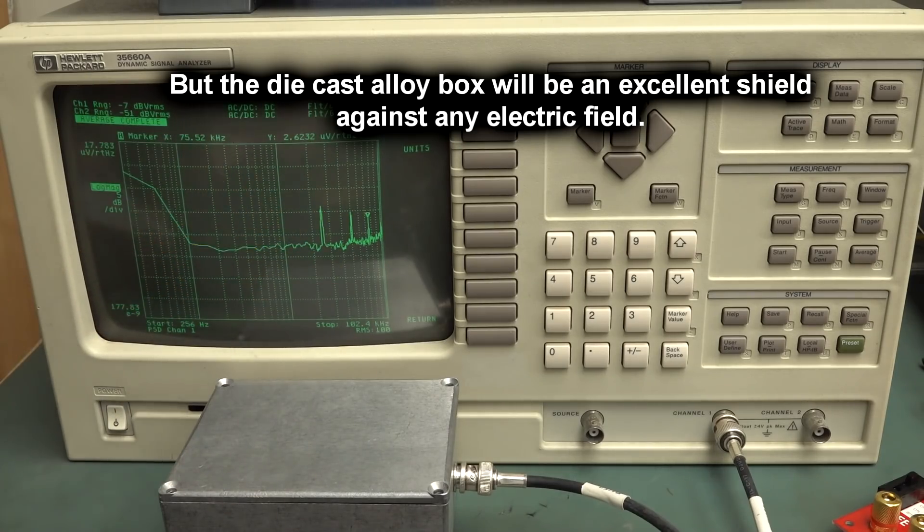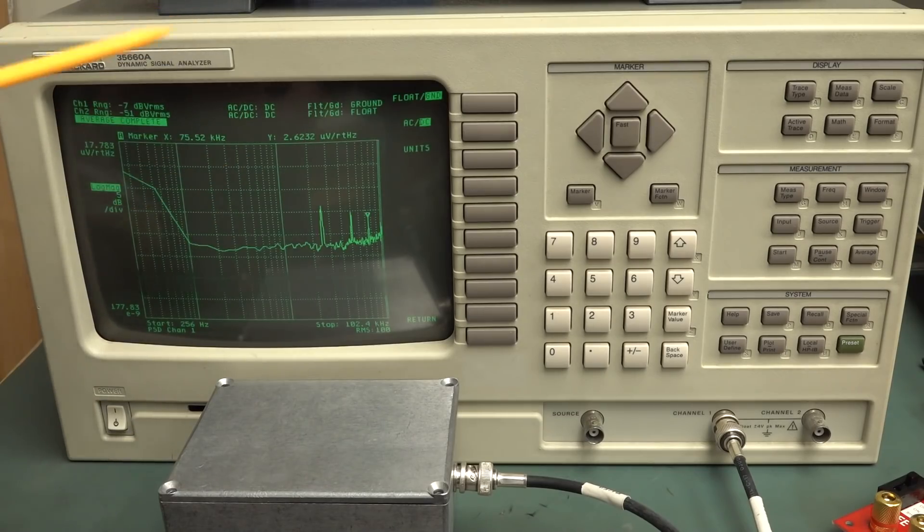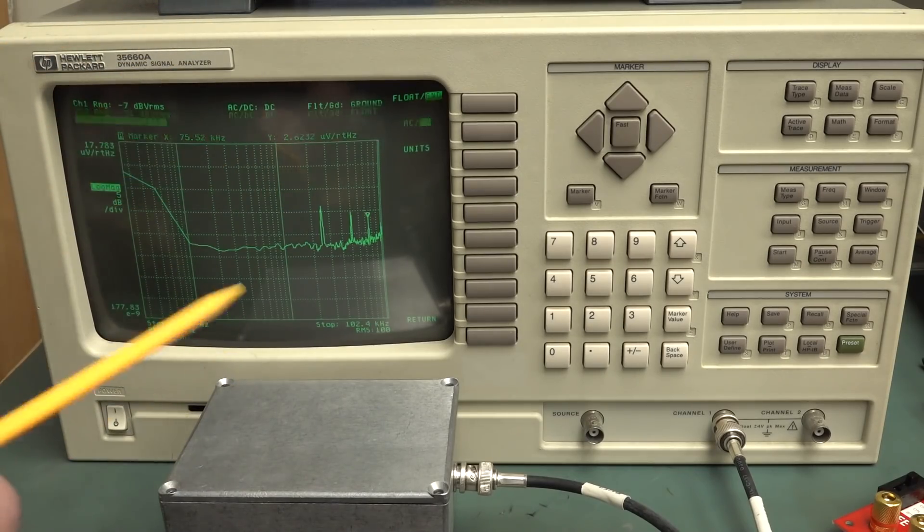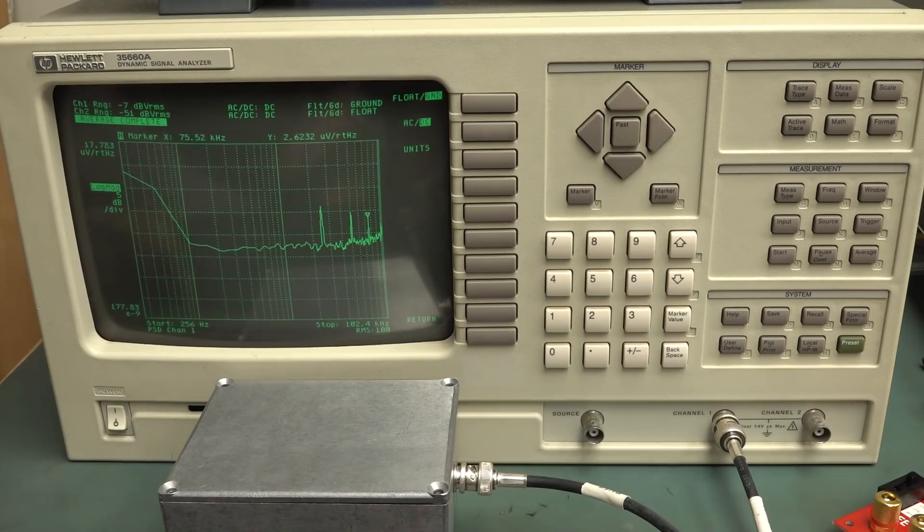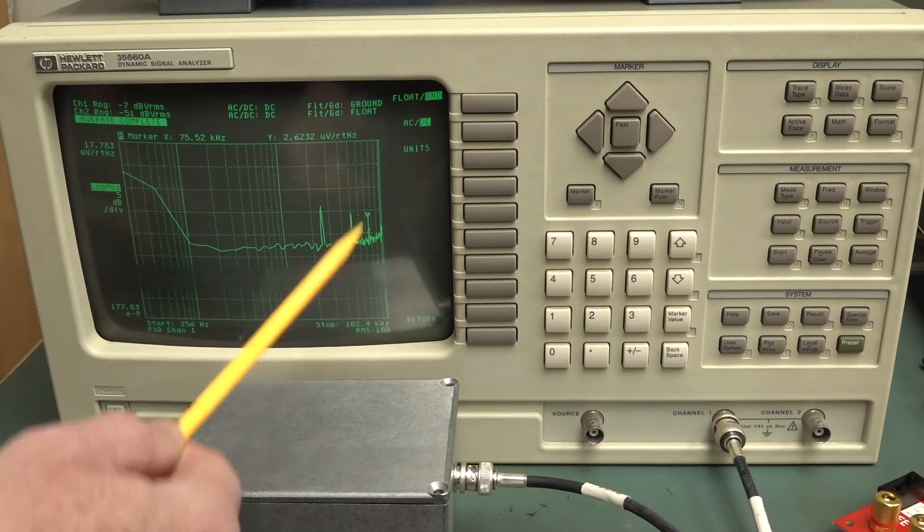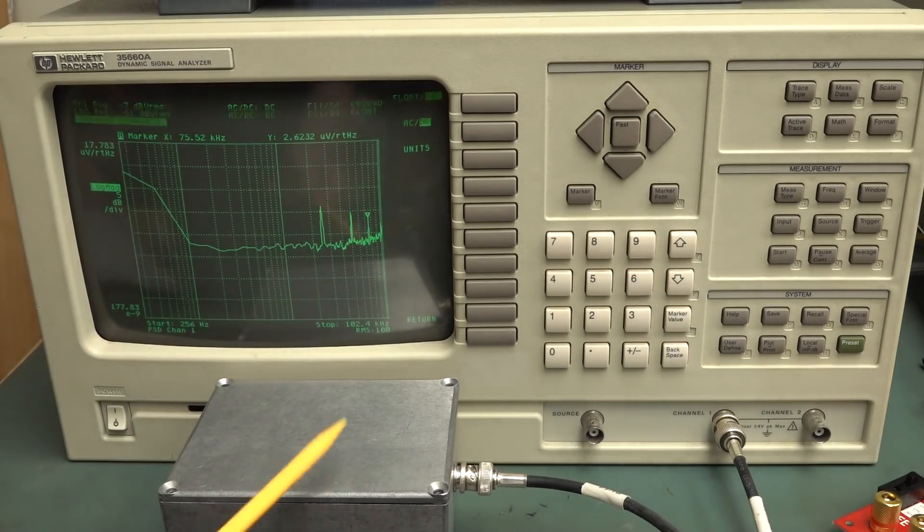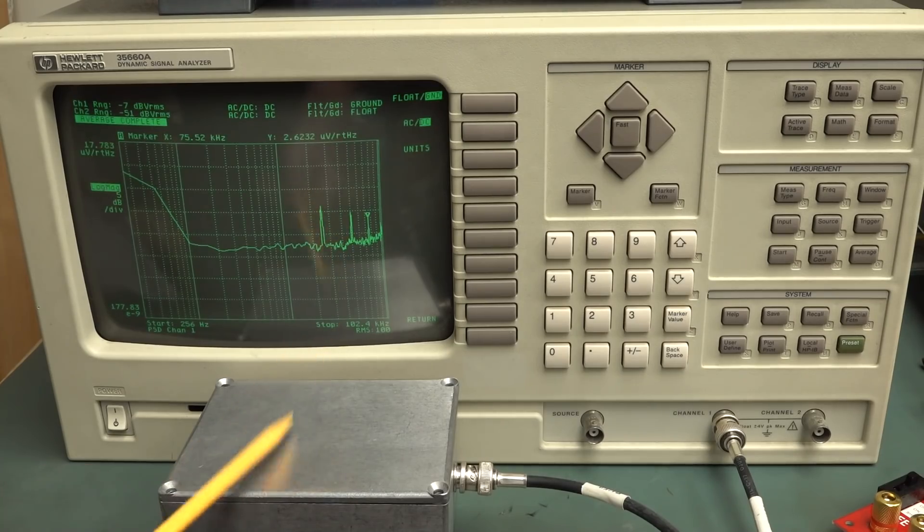Which is behind there, like a foot away or something. I don't know how deep this CRT is, but it's pretty darn close, and we're able to pick up the magnetic field even through the shielded box.